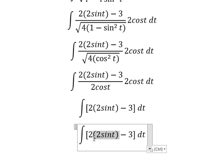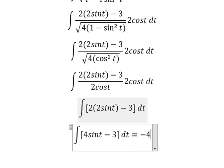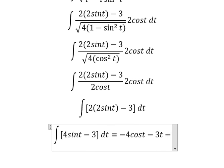This one we change for cos t square. This one we have 4 sin t. The integration of 4 sin t, we have negative 4 cos t. The integration of number 3, we have 3t. And we put c.